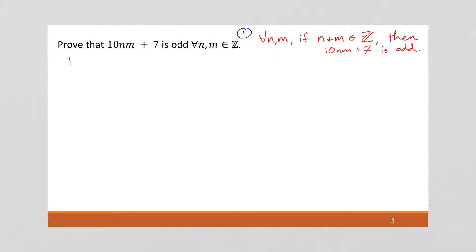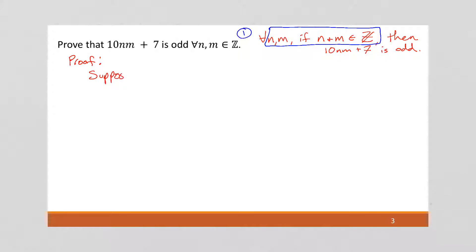Step two: proof. Step one is something you want to do before the actual proof — you want to write that out so you know how to set the proof up. Later on, people often skip step one, but for right now I want you to be explicit about it to help with the setup. So the setup is going to be that we want to suppose this first part of our conditional statement. I'm going to suppose that n and m are any integers. I could also write that m and n are particular but arbitrarily chosen integers, which is a little more formal, but it's not required. So that's step two.